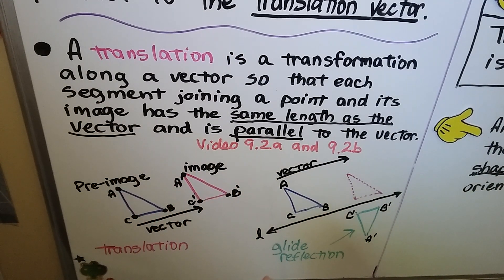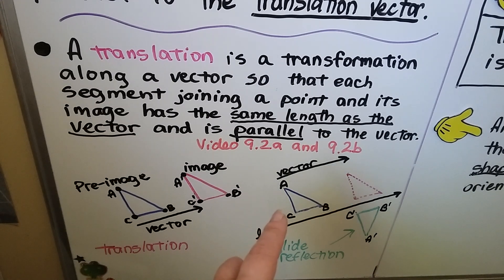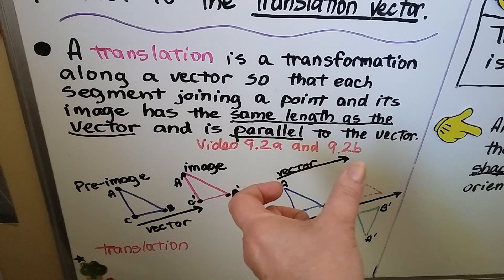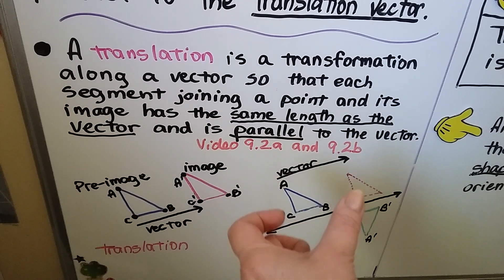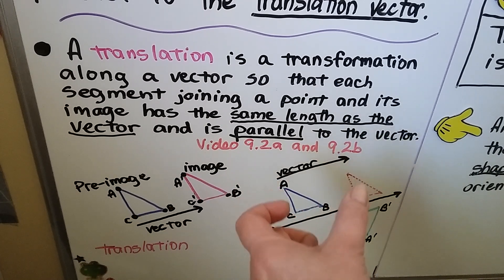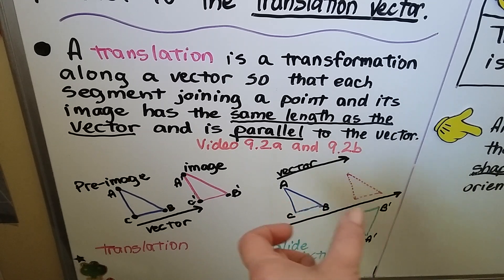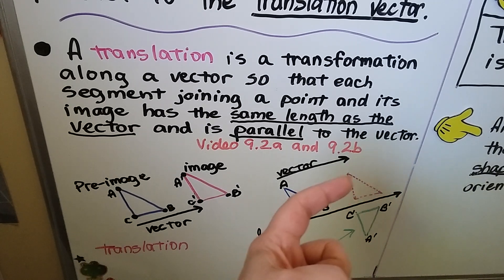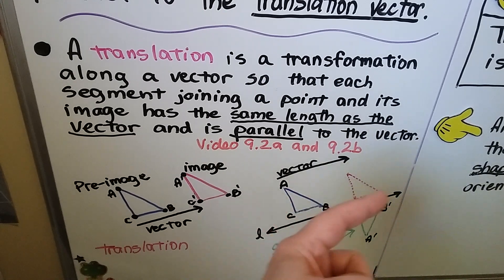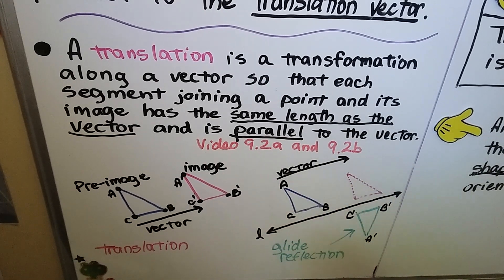Here we have a glide reflection. We have abc, our blue triangle, and our vector is this long. It's going to translate so that a moves to this point, b moves to this point, and c moves to this point. Then it reflects across line l so that we get a prime b prime c prime. That's a glide reflection.